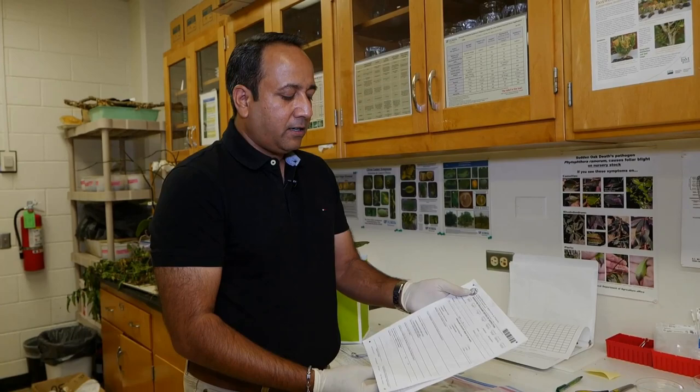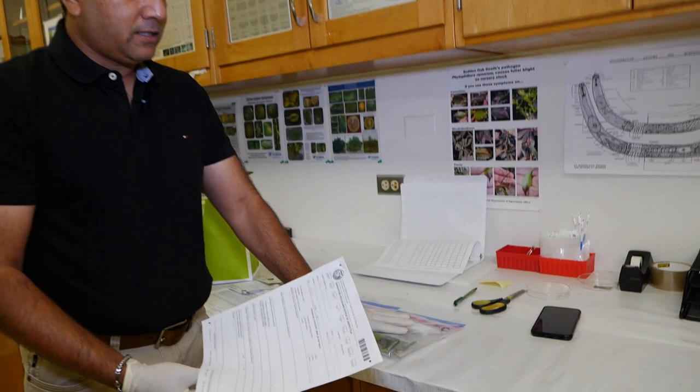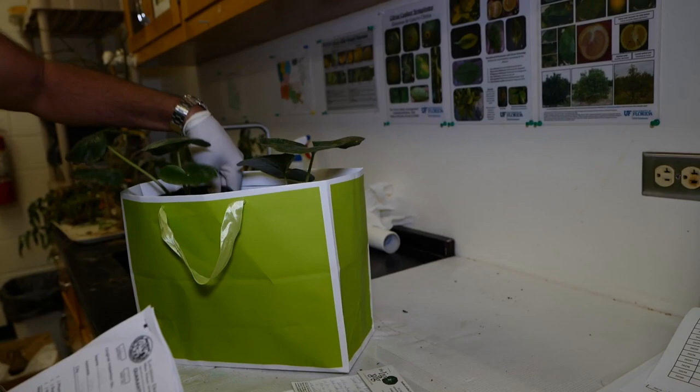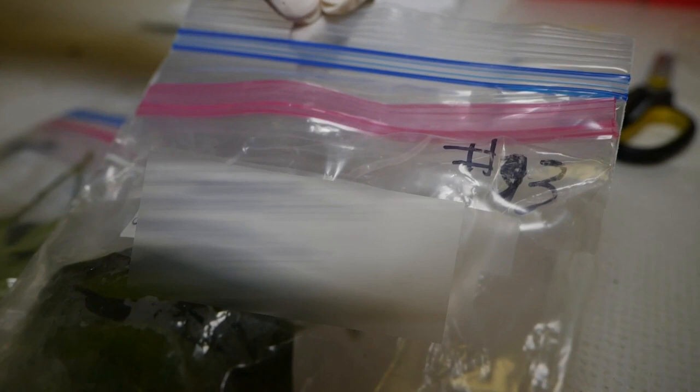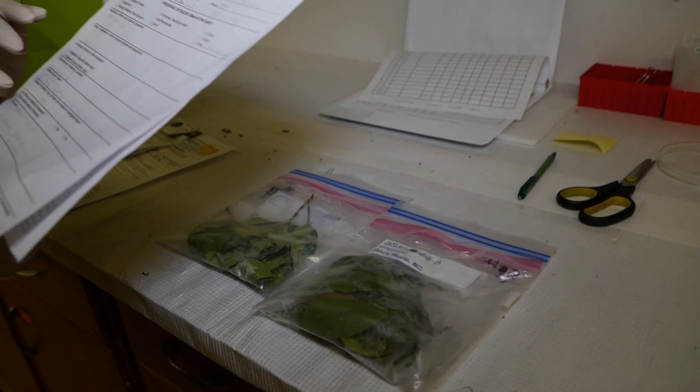Here is another example of a sample that's been collected by Department of Agriculture and Forestry. This is a regular sample, this is a quarantine sample. You can see the difference - this just came in in a regular gift bag, but this sample has a number, collection number and everything, and it's double bagged.